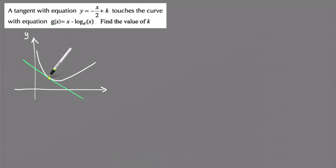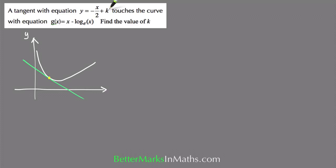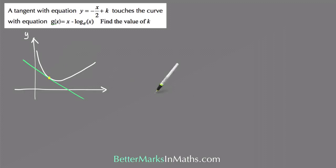I'll draw the tangent in and mark the point where it touches in yellow. That yellow point is where the tangent meets the graph of g of x. Because that point is common to both the tangent and the curve, the x and y coordinates belong to both. To find k, we need to substitute a point that belongs to the tangent into its equation, using the fact that being a tangent means the gradients must be equal at that point.